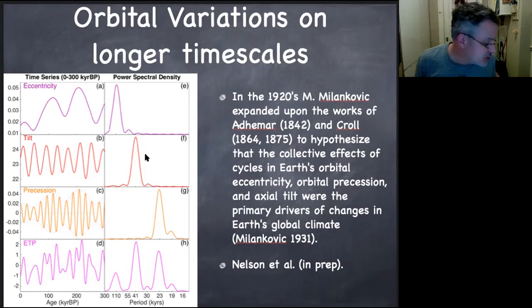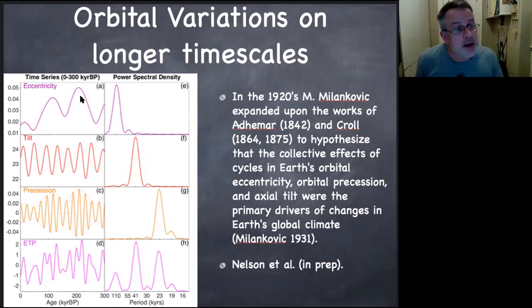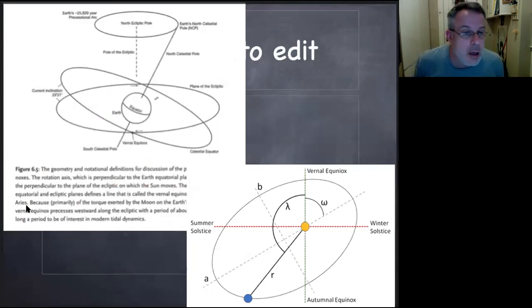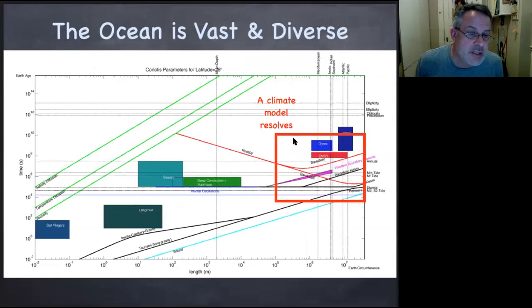Milankovitch cycles are really different because they're so long — tens of thousands of years — that the equilibrium response, as an analogy to tidal forcing, is the only thing we have to worry about. There's no real dynamical response on these timescales for the oceans, though there might be for the ice sheets. There's a lot of complicated geometry to do with the solar cycle. A climate model resolves this part of the story. In there are the tides, conceivably the Kelvin waves and baroclinic Rossby waves — we could be doing this better than we are.